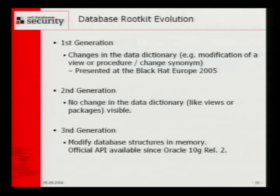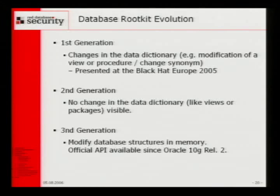I presented the database rootkit last year at Black Hat Europe. Today I'll give a short introduction from last year's content and cover the second generation. The second generation no longer needs modifications in the data dictionary. It's also possible to write third generation rootkits because Oracle released with Oracle 10G Release 2 an API that lets you directly access and modify the memory of the database. The first generation is easy to find, easy to implement, and it affects all relational databases, not only Oracle. In SQL Server 2005, Microsoft already implemented some anti-database rootkit technologies — they sign views and warn you if a view is modified.